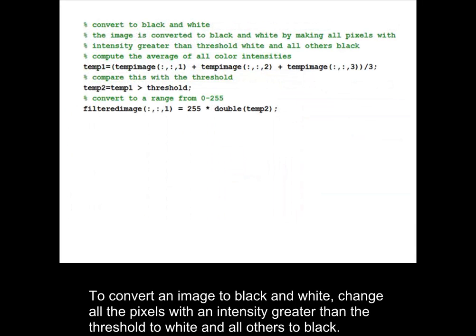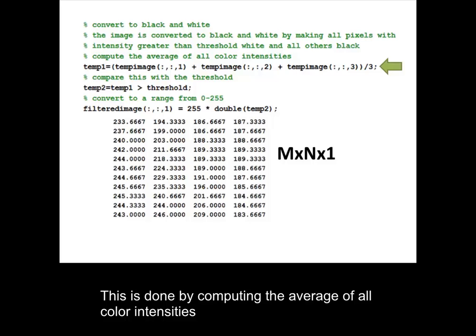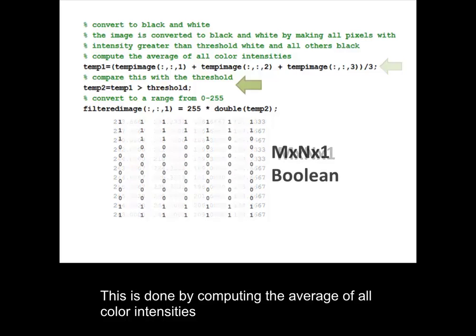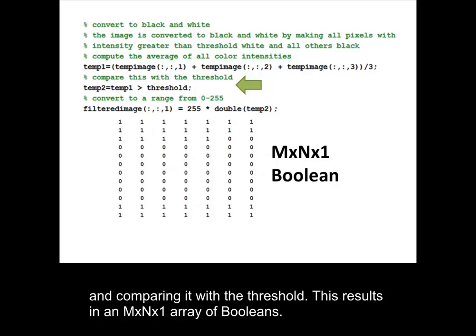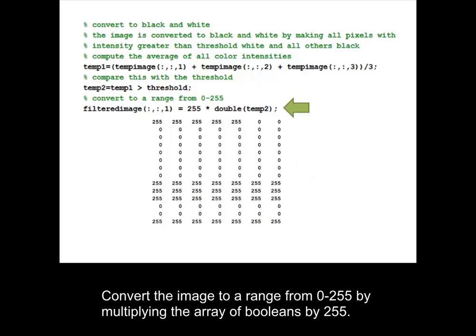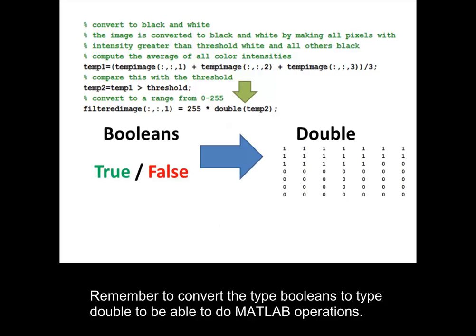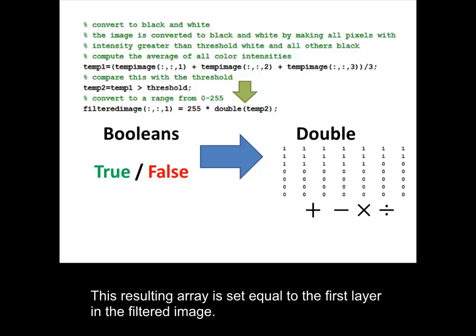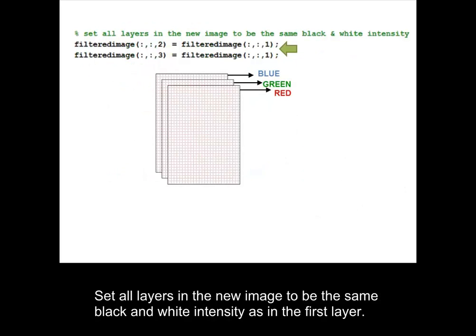To convert an image to black and white, change all the pixels with an intensity greater than the threshold to white, and all others to black. This is done by computing the average of all color intensities and comparing it with the threshold. This results in an M by N by 1 array of booleans. Convert the image to a range from 0 to 255 by multiplying the array of booleans by 255. Remember to convert the type booleans to type double to be able to do MATLAB operations. This resulting array is set equal to the first layer in the filtered image.